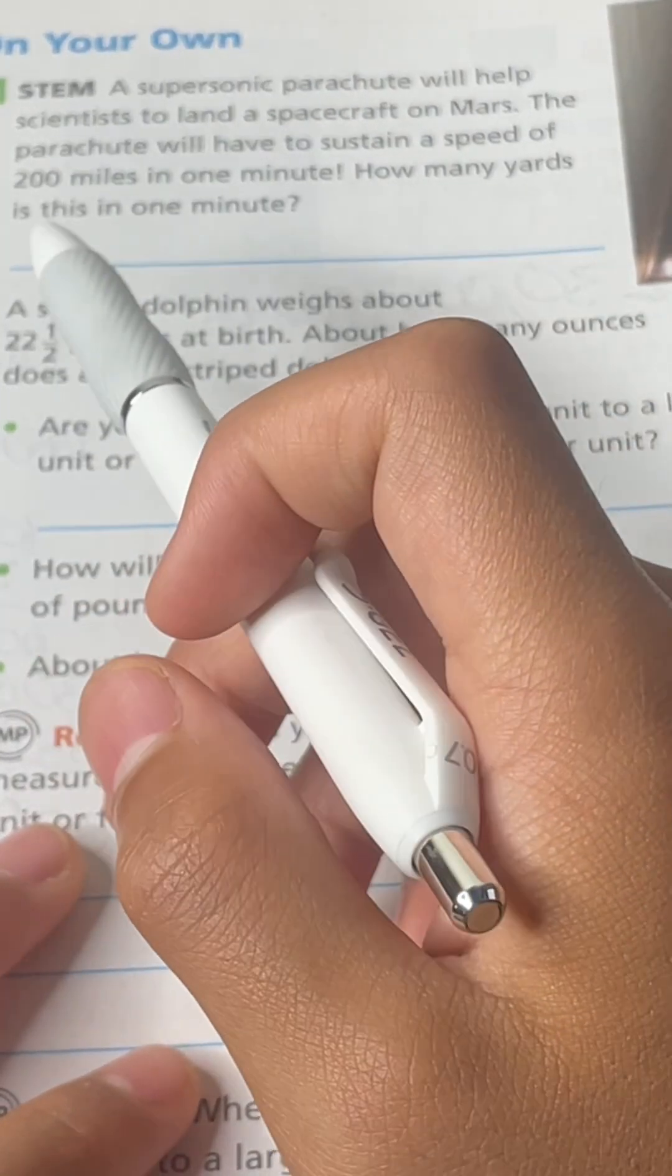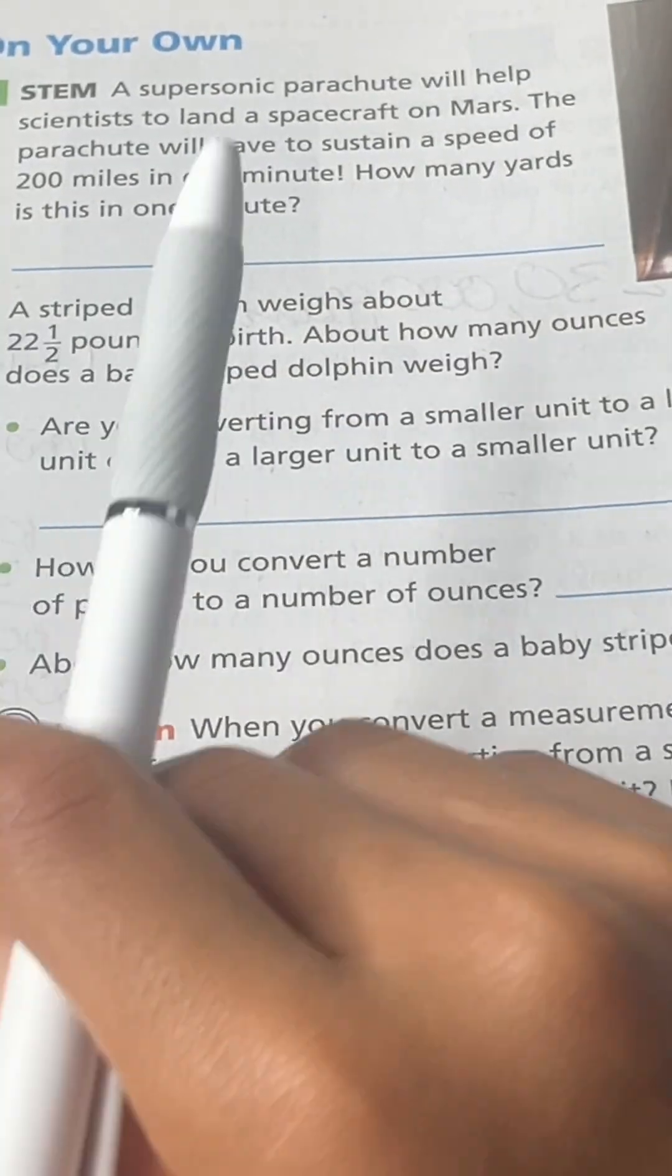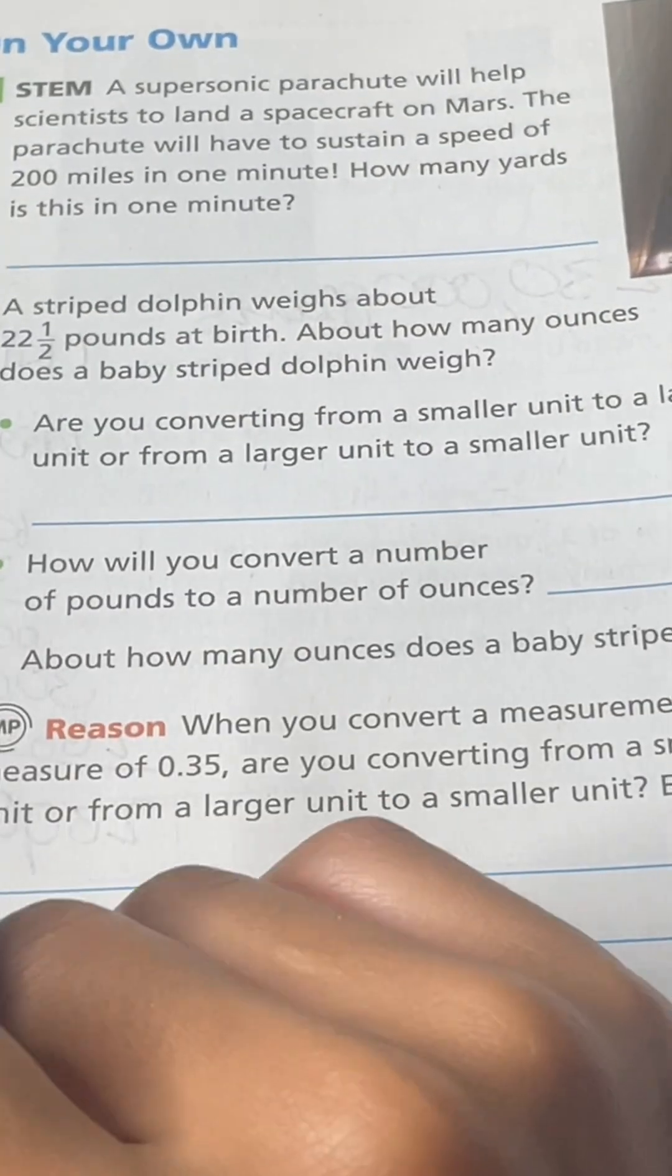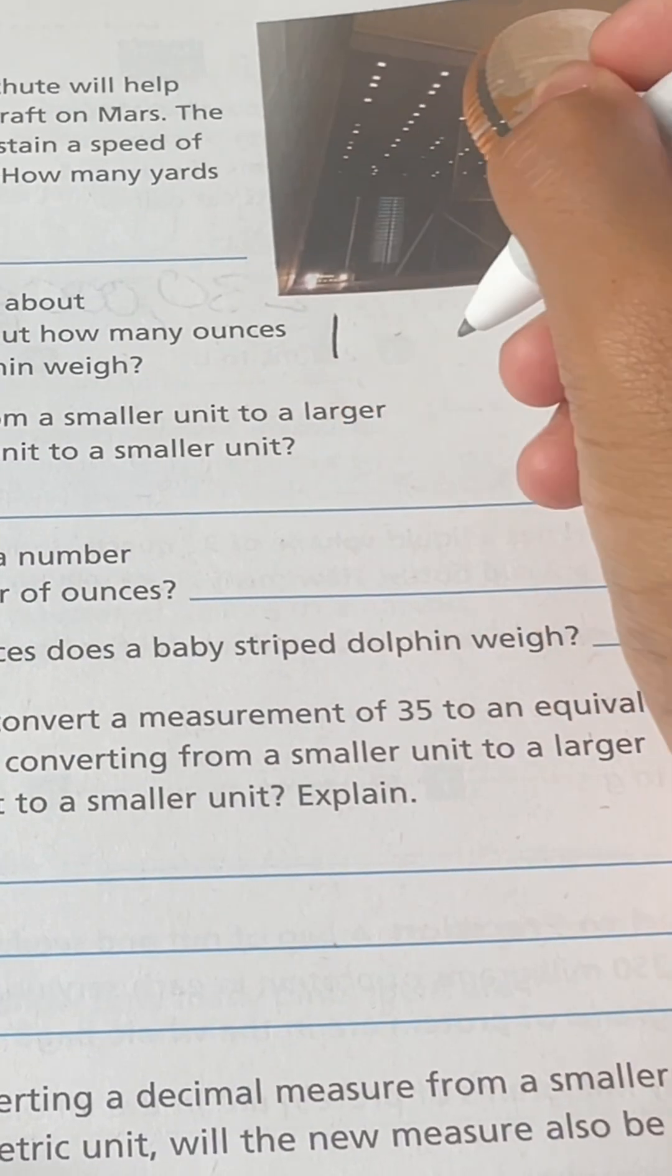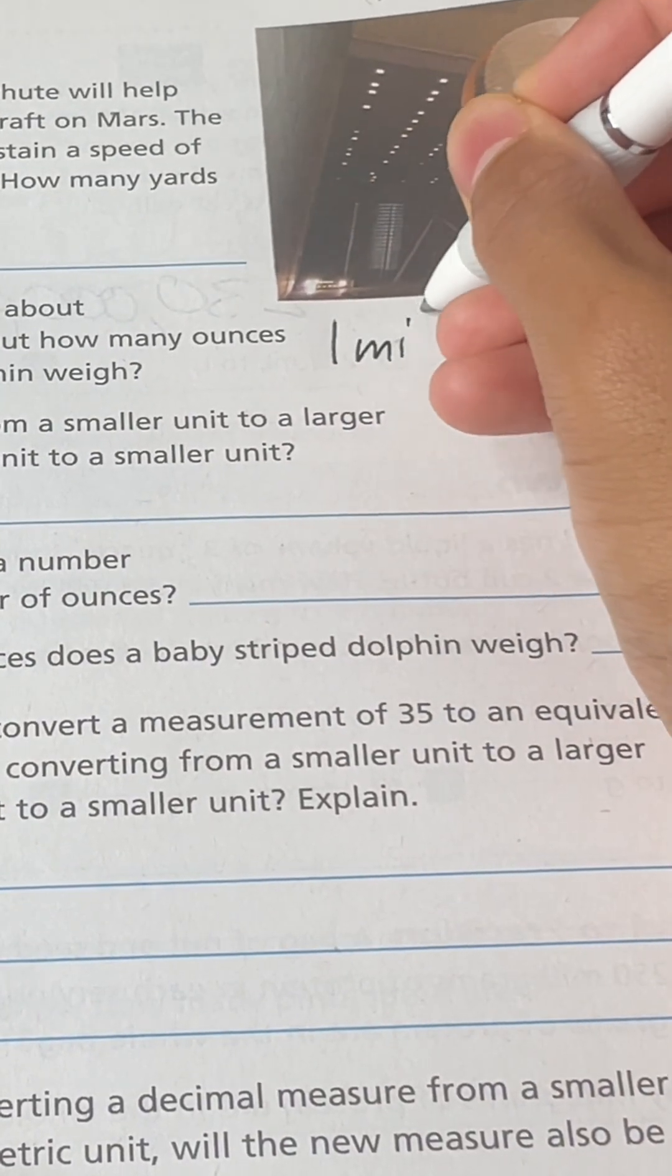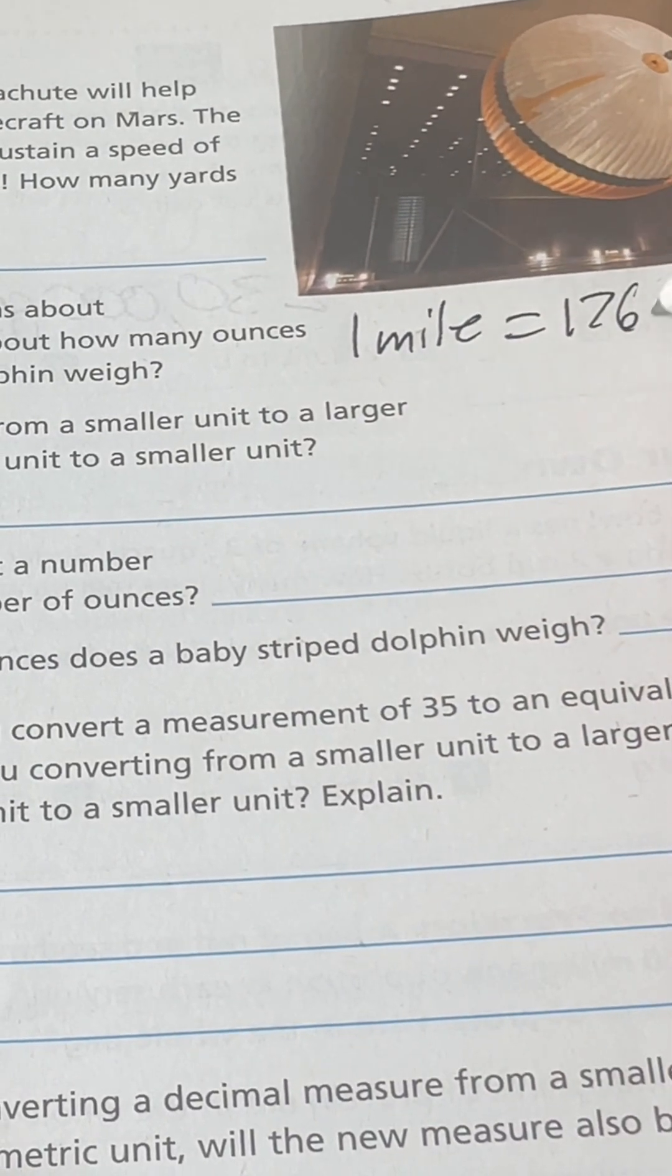So the parachute has 200 miles per minute. How many yards is that per minute? One mile equals 1,760 yards.